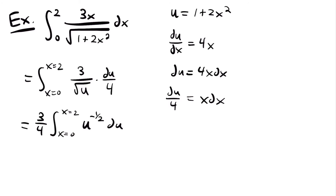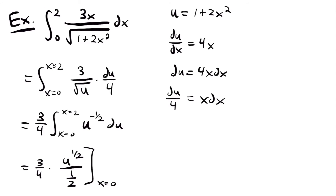Using the power rule, we add 1 to negative 1/2 to get positive 1/2, then divide by 1/2. Dividing by 1/2 is the same as multiplying by 2, so we get 3 fourths times 2 times u to the 1/2 power, evaluated from x equals 0 to x equals 2. Since 3 times 2 is 6 and 6 divided by 4 reduces to 3/2, we have 3 halves times u to the 1/2 power.